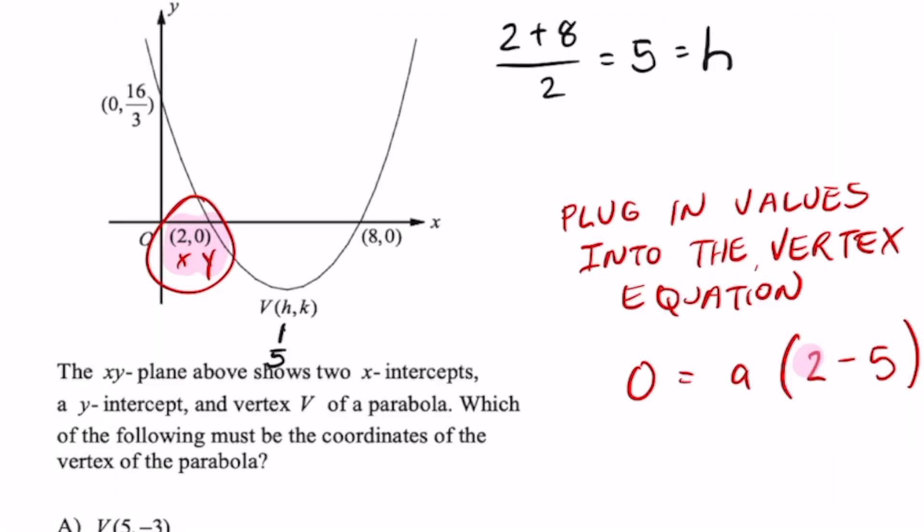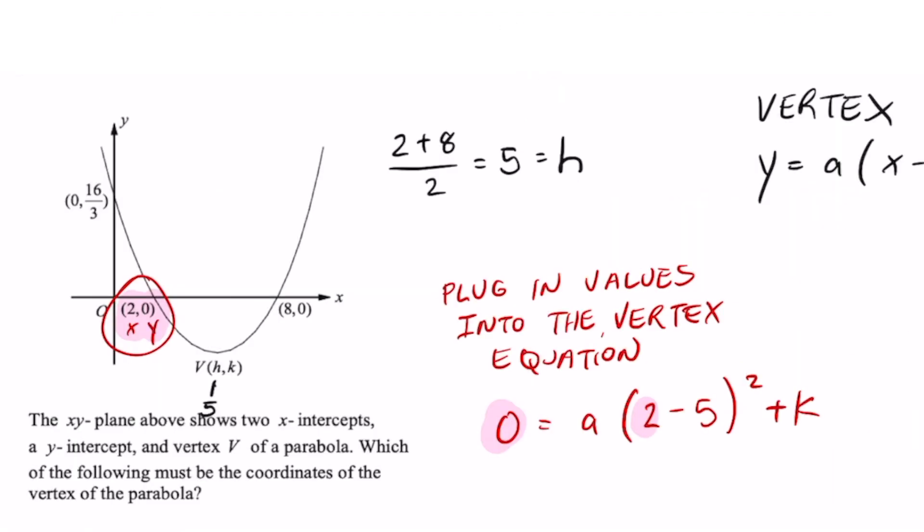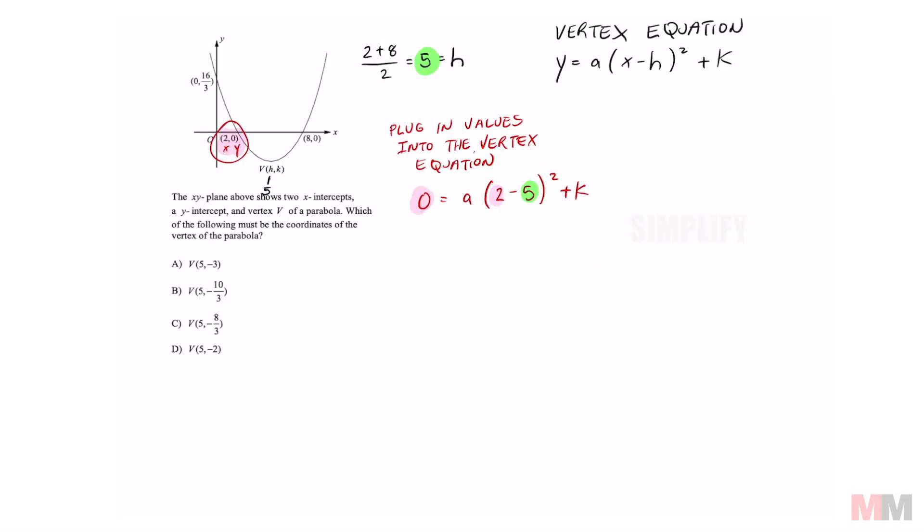So my x and y was 2 and 0, and remember we found our h value up here which was 5. Go ahead and simplify that and you get 0 equals a times 2 minus 5 is negative 3 squared plus k, which then simplifies to 9a plus k because negative 3 squared is 9.